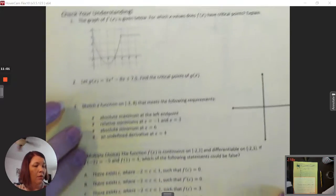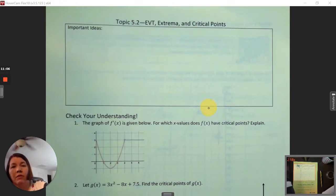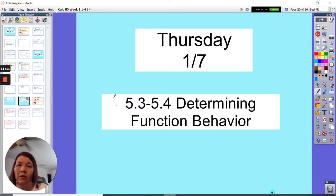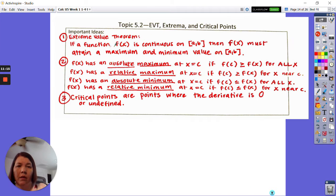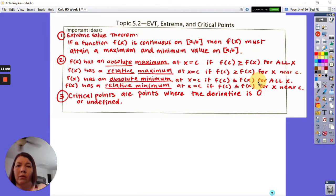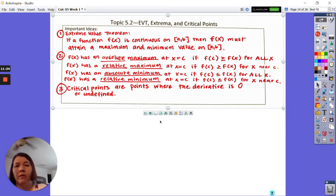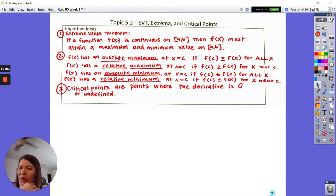The extreme value theorem. If a function f(x) is continuous on a closed interval from a to b, then f(x) must attain a maximum and a minimum on that closed interval. So if the function is continuous, there must be a largest and there must be a smallest. If it's not continuous, that's not necessarily true. But if it is continuous, there must be a maximum and there must be a minimum. The extreme value theorem is really critical. We talk about it a lot.